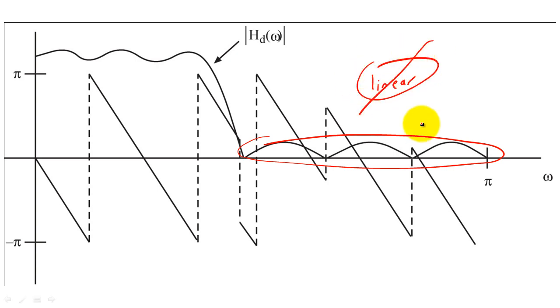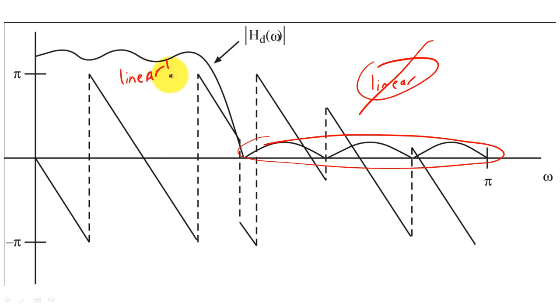If we can create a filter with linear phase in the pass band, but not the stop band, we say that the filter has generalized linear phase.